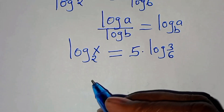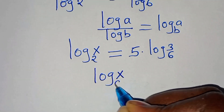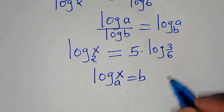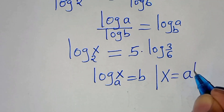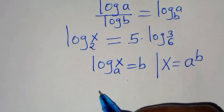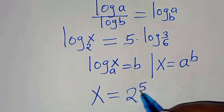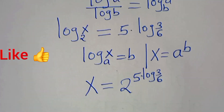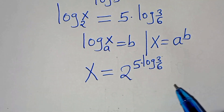Now to solve for x: if log base a of x equals b, this implies that x equals a raised to the power of b. So this means x equals 2 raised to the power of (5 · log base 6 of 3).